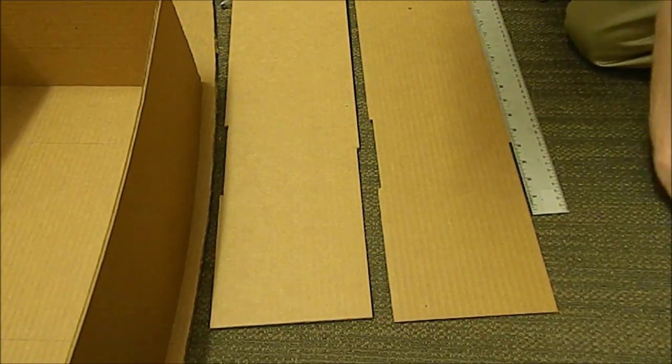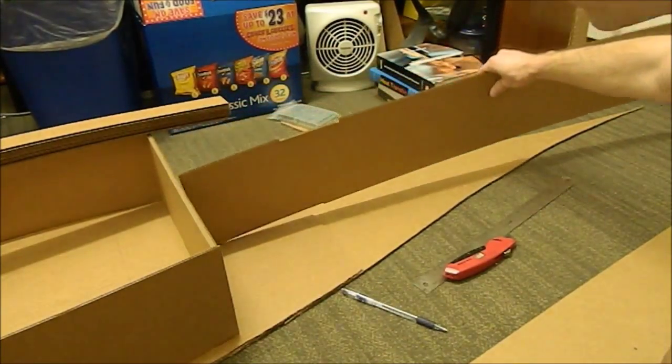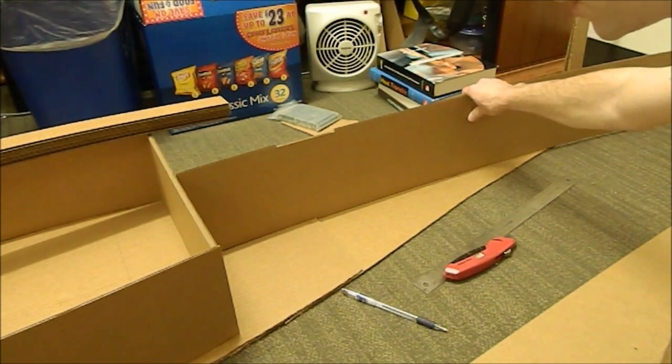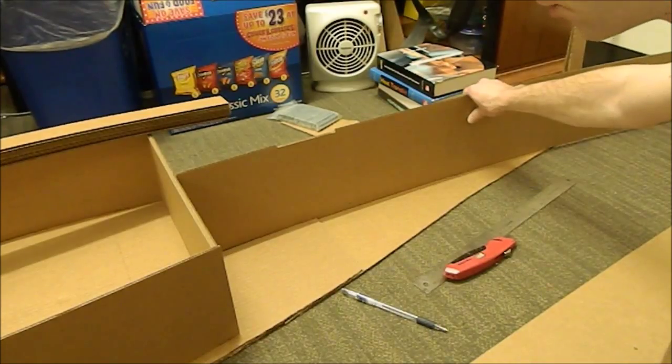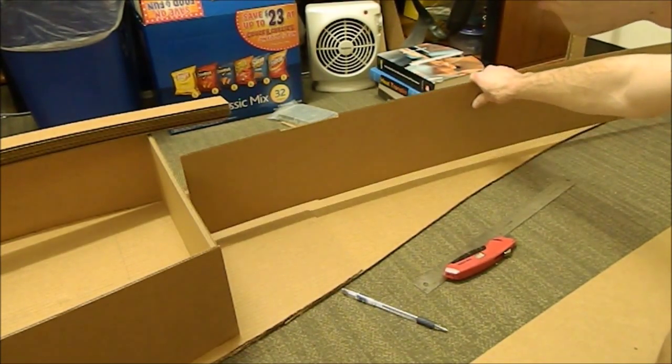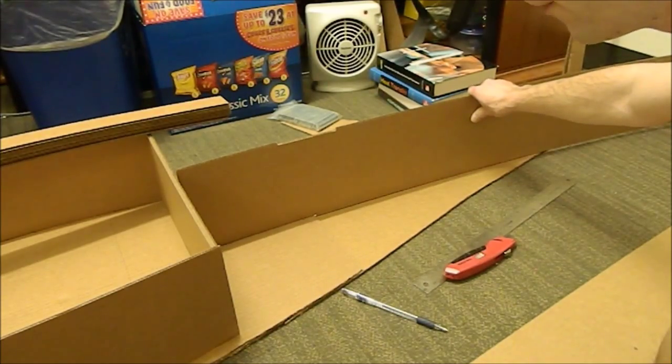I'll show you right now how those go together. The keel will fit just like so. I always cut my slots in this case a little bit longer than I need to so that they fit. I've got about an extra eighth of an inch, which is not a problem because that's going to get glued and caulked anyway.